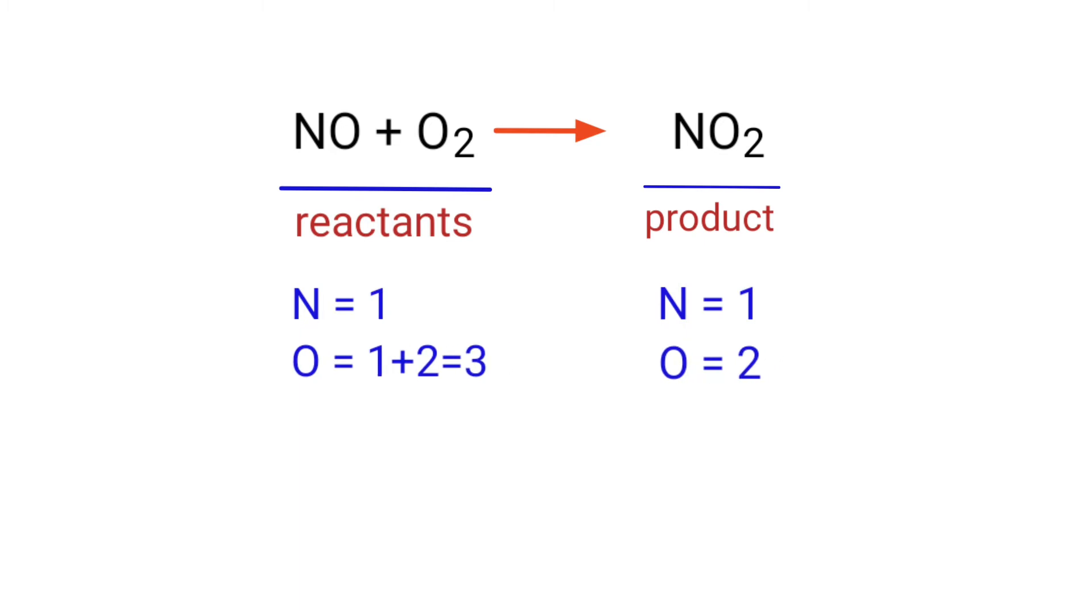In the reactants side, there are 1 nitrogen atom and 3 oxygen atoms present. And in the products side, there are 1 nitrogen atom and 2 oxygen atoms present.